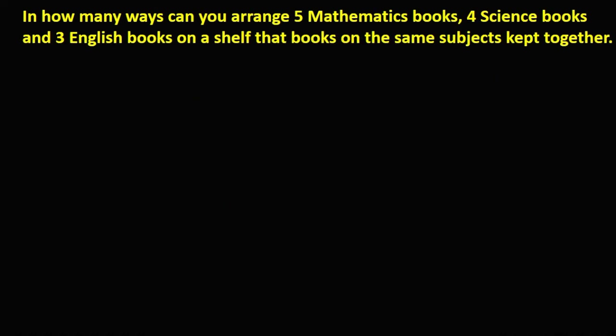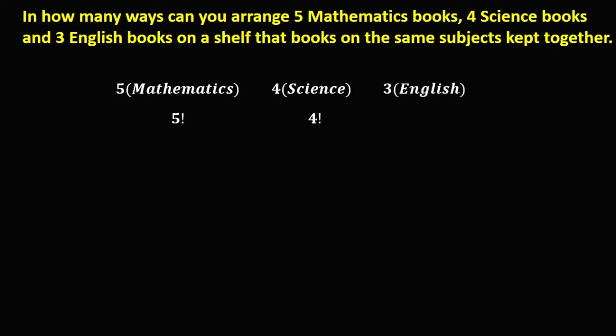For this next problem: in how many ways can you arrange 5 mathematics books, 4 science books, and 3 English books on a shelf if books on the same subject must stay together? The mathematics books give us 5 factorial, the science books give us 4 factorial, and the English books give us 3 factorial.